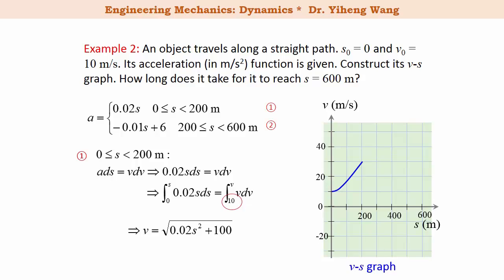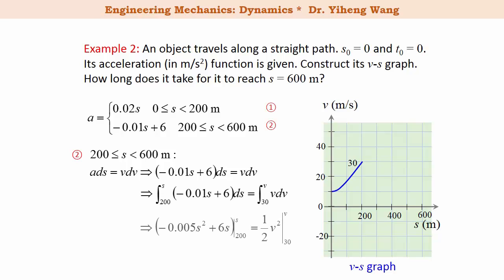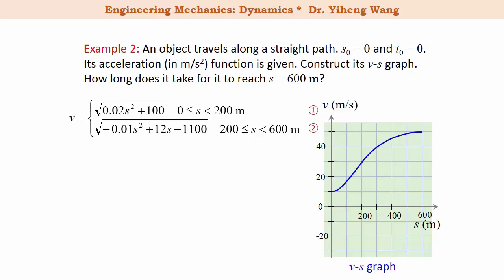We determine that at the end of the first period the velocity is 30 meters per second. For the second part, with position between 200 and 600 meters, we follow the same procedure, sketch the second part on the v-s graph, and calculate that when the position reaches 600 meters the velocity is 50 meters per second. That completes the v-s graph, and we organize the velocity as a piecewise function of position.